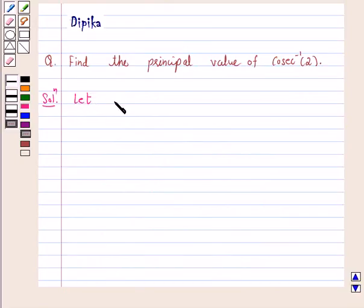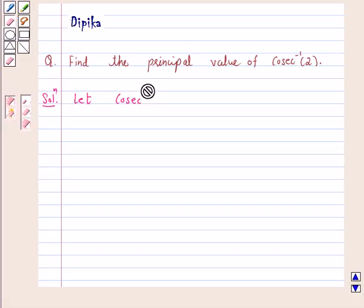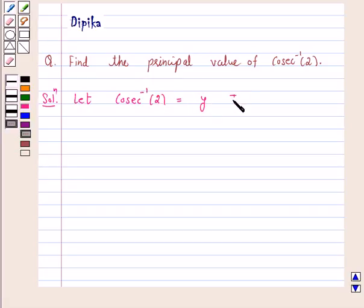Let cosecant inverse 2 is equal to y. Then cosecant y is equal to 2, which is equal to cosecant pi by 6.